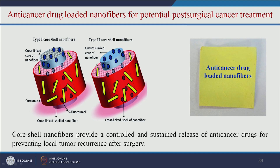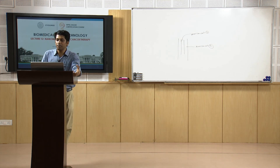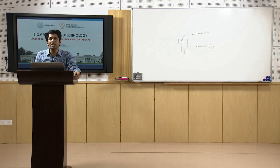The core-shell nanofibers can be tuned to control drug release by cross-linking — by tuning the cross-linking, we can control the rate of drug release. These core-shell nanofibers provide controlled and sustained release of anti-cancer drugs for preventing local tumor recurrence after surgery. The main drawback of tumor surgery is that after tumor removal, cells can grow again. To avoid this, after tumor removal we can place anti-cancer drug-loaded nanofibers at the surgery site, which slowly release the drug and prevent recurrence of cancer cells.